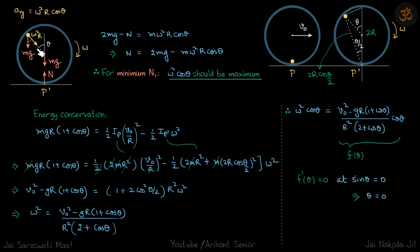Let's take a general location when A has reached an angle theta with the vertical. We calculate the normal reaction at that particular angle theta, and then determine at what value of theta the normal reaction is going to be minimum. Let's say the hoop is rotating with omega at this position.